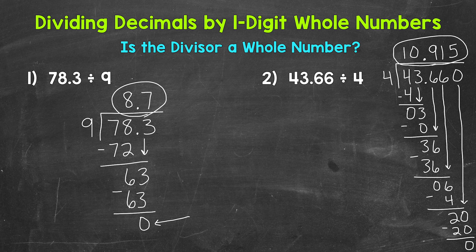So there you have it. There's how you divide decimals by one digit whole numbers. Always check: Is the divisor a whole number? In this video, yes, the divisors were whole numbers. So we brought that decimal straight up into our answer and then went through the division process. I will cover what to do when the divisor is not a whole number in other videos. Those links are down in the description.